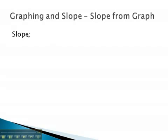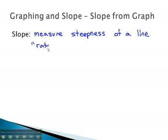We use slope to measure the steepness of a line. It is often called the rate of change, or how fast this line or relationship is changing.